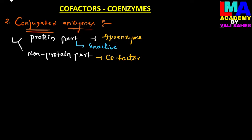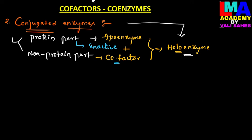When the protein part of a conjugated enzyme is associated with the non-protein part, the enzyme will be activated. The activated enzyme then accelerates or speeds up the rate of the chemical reaction. Both apoenzyme and cofactor combine together to form a holoenzyme. All conjugated enzymes are also known as holoenzymes.